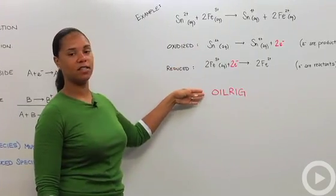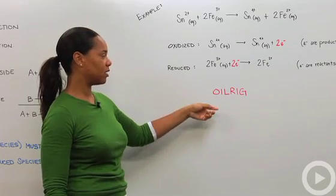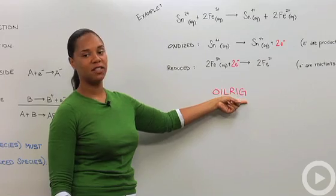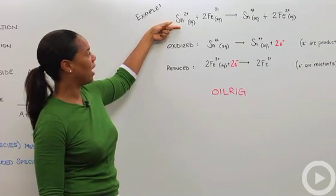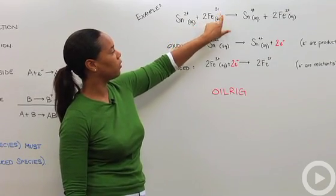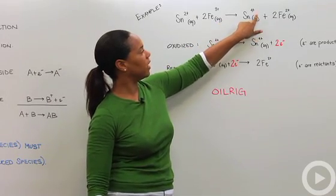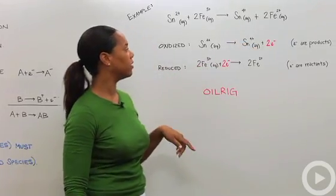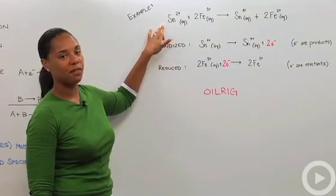So let's do a quick example. Before you even delve into this, I want you to remember and put at the forefront of your mind OIL RIG, so that you remember that the oxidized species is losing electrons and the reduced species is gaining electrons. So here we have Sn 2+ aqueous plus 2 Fe 3+ aqueous forming Sn 4+ aqueous plus 2 Fe 2+ aqueous.